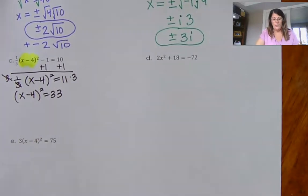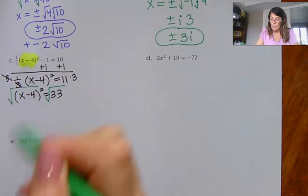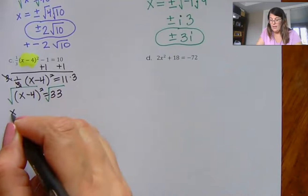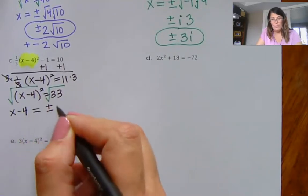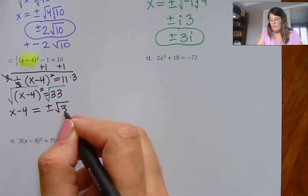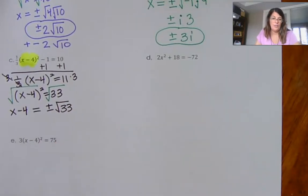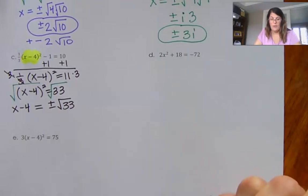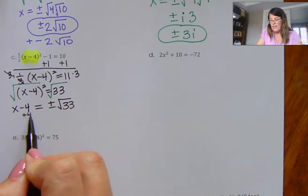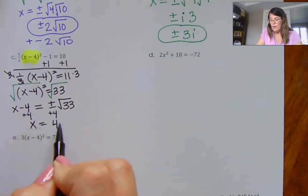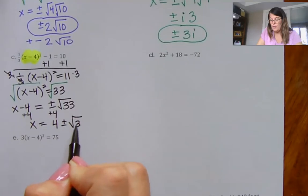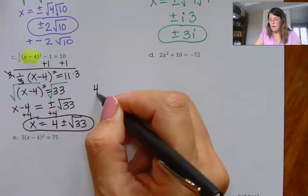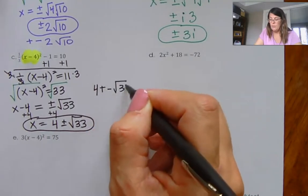Once I get the squared thing alone, I'm home free — I just take the square root of both sides. The square root of (x-4)² is just x minus 4, and this is plus or minus the square root of 33. 33 doesn't have any perfect squares trapped inside, so it is just plus or minus square root of 33. I add the 4 over to the other side, so my answer is 4 plus or minus the square root of 33. In Buzz, you can literally type in 4 plus minus square root 33.